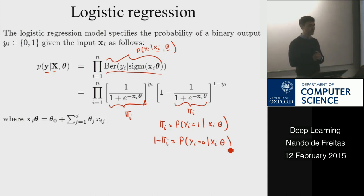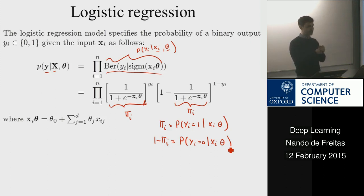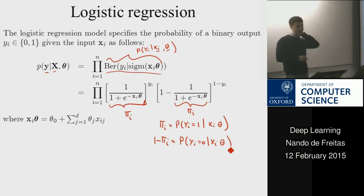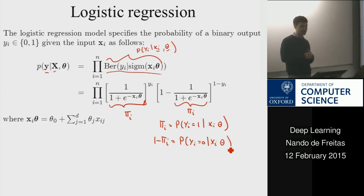We're essentially doing composition: we start with a linear model xθ, then feed it through a Bernoulli squashing function, and use that to construct the probability model. The type of probability distributions we need are very few — Gaussian, Bernoulli, and so on — but because we can always use compositions of functions, we can build very complex probability distributions.